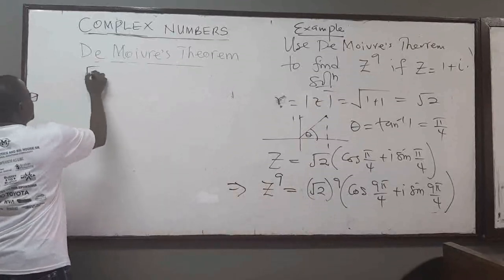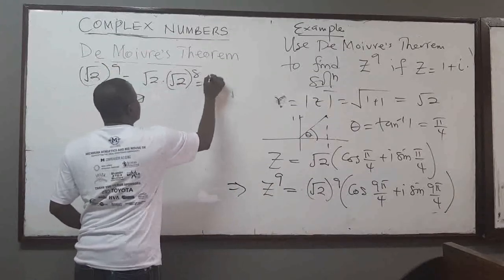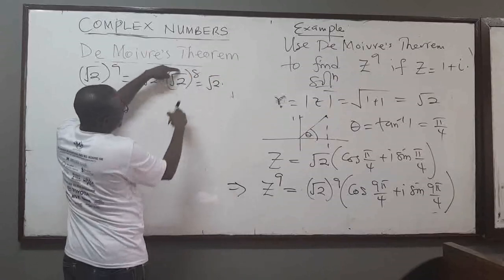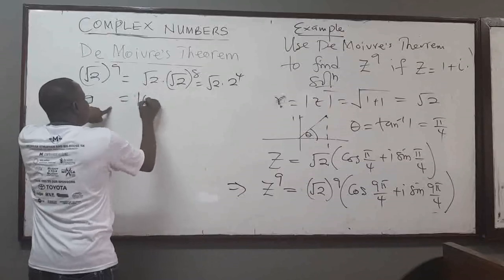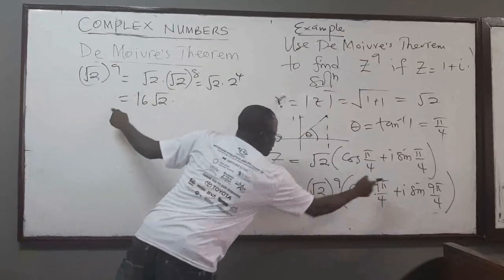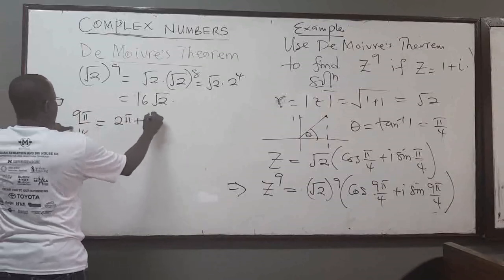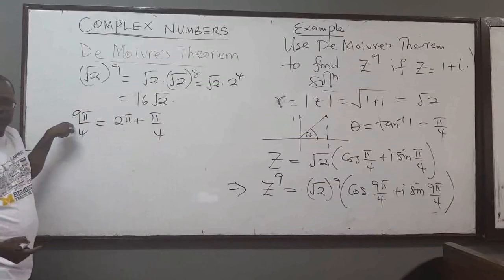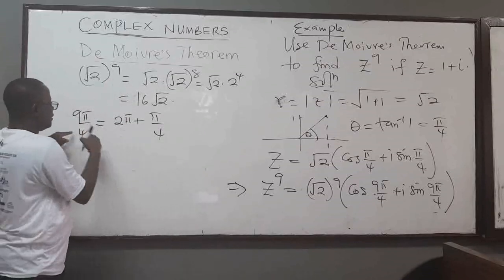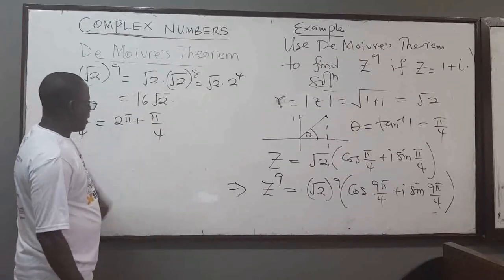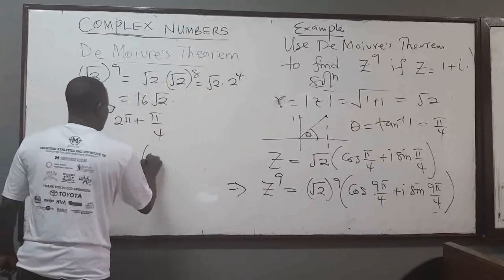Let's simplify. (√2)^9 is √2 times (√2)^8, which is √2 times 2^4 = 16√2. Also, 9π/4 is the same as 2π plus π/4, and since cosine and sine are periodic with period 2π, we can replace 9π/4 with π/4. Therefore, z to the power 9 equals 16√2·(cos(π/4) + i·sin(π/4)).